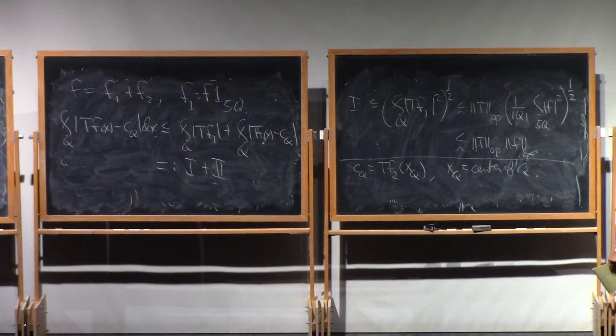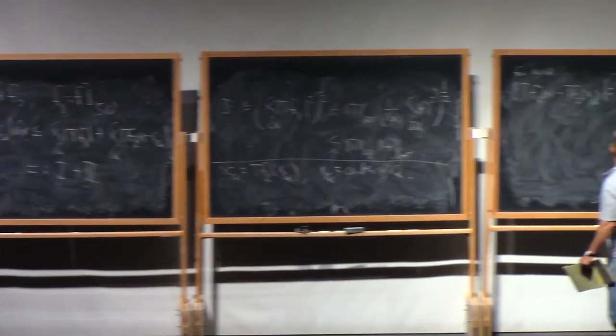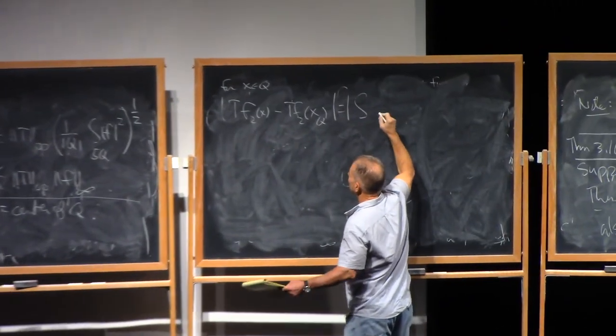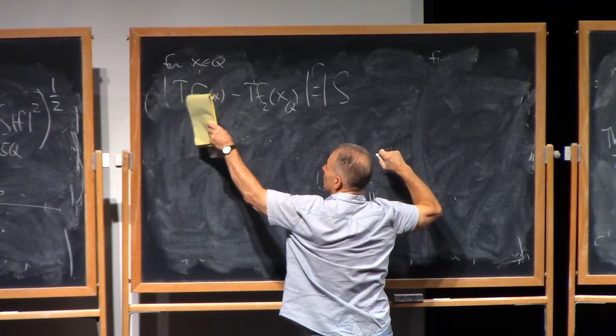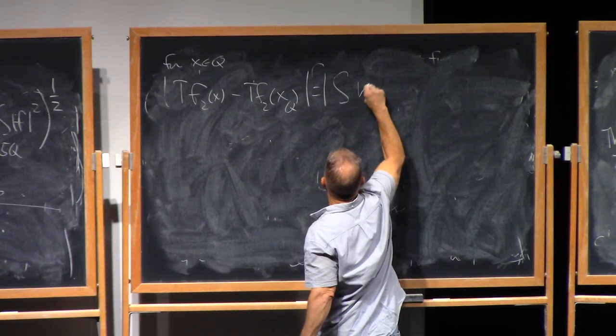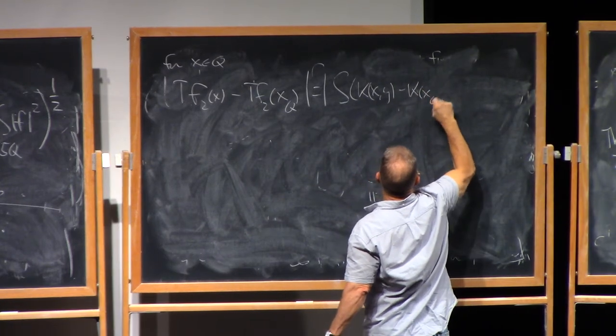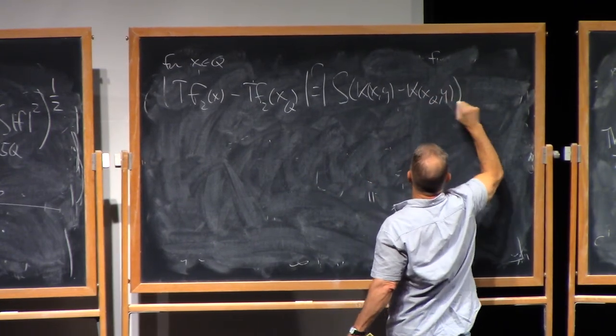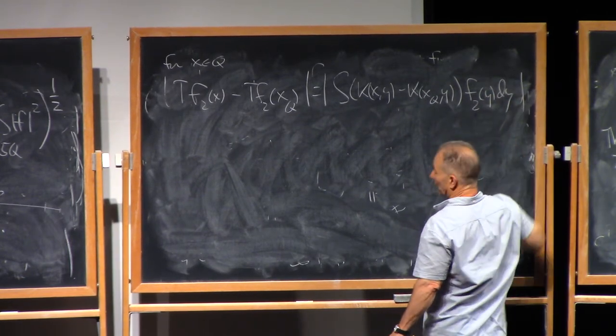So then for X in Q, T F2 of X minus T F2 of XQ. What we mean by this is that this is really the kernel for T, K of X,Y, evaluated at X and Y minus the value at X,Q and Y. And then that's integrated against F2.